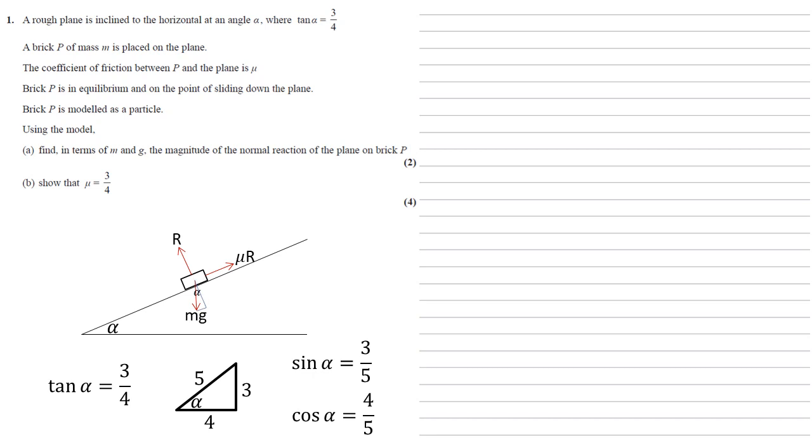We've now got everything we need to answer the question, so let's start balancing our forces. So perpendicular to the slope, we've got R going upwards. Downwards, we've got mg from gravity, but our mg is going straight downwards. We want it perpendicular to the slope, so this is going to be cos alpha.